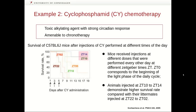In the second example of chronotherapy, we will look at cyclophosphamide, abbreviated CY. Cyclophosphamide is a toxic alkylating agent with a strong circadian response, which means it is amenable to chronotherapy. This diagram shows the survival rate of wild-type mice after they were injected with cyclophosphamide at different time points during the day. The mice were injected with the same dose of cyclophosphamide but at different Zeitgeber times, abbreviated ZT, where ZT zero corresponds to the beginning of the light phase of the daily cycle. Animals injected at ZT10 to ZT14 had a much higher survival rate compared to littermates injected between ZT22 and ZT02.